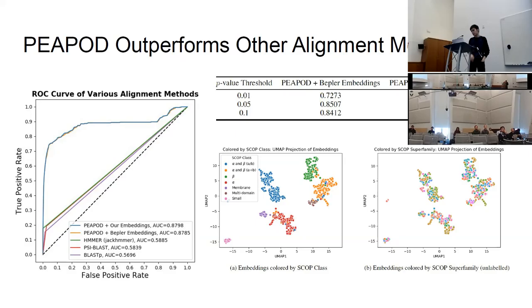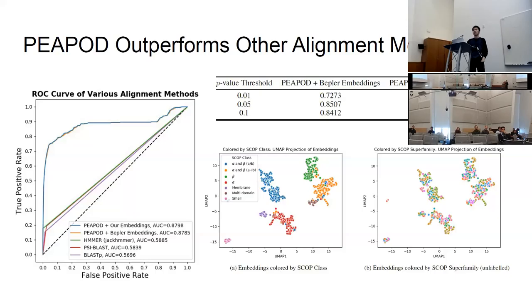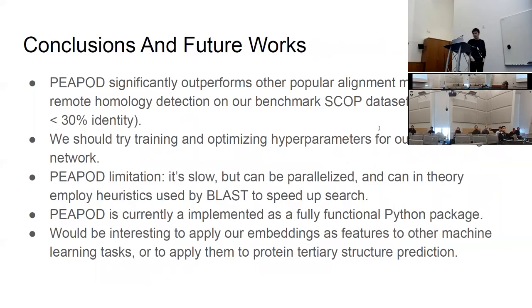We also investigated why these embeddings work so well. We did a UMAP plot of the protein sequences — sequences not seen during training — and colored them by SCOP class. The plot on the left shows embeddings colored by SCOP class, showing alpha, beta, small proteins, etc., and you see clear clustering. The plot on the right shows the same embeddings colored by SCOP superfamily, which is what we care about for homology detection. Within each SCOP class, you can see superfamily-level clustering as well, which explains why the method works so well.